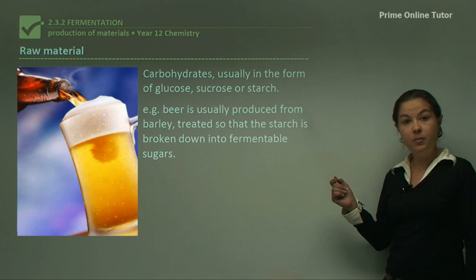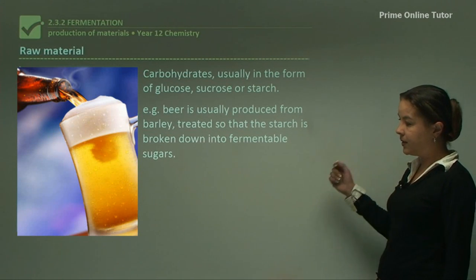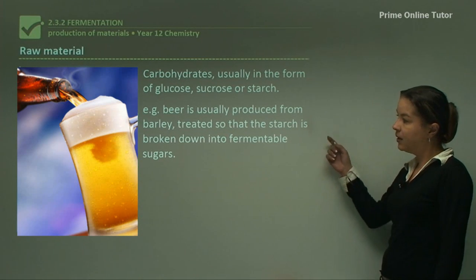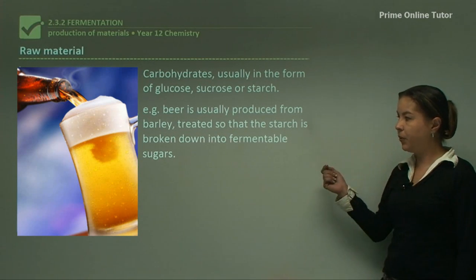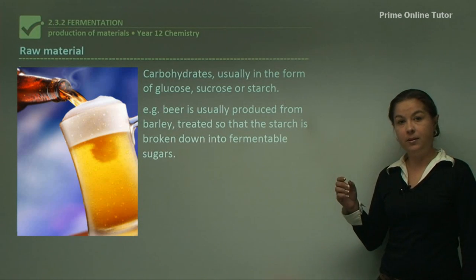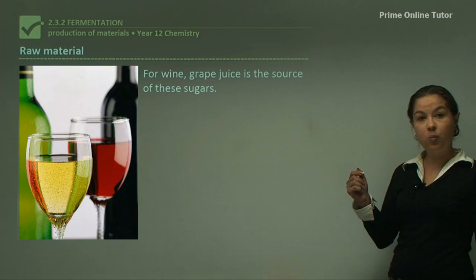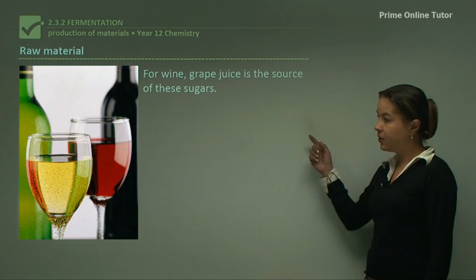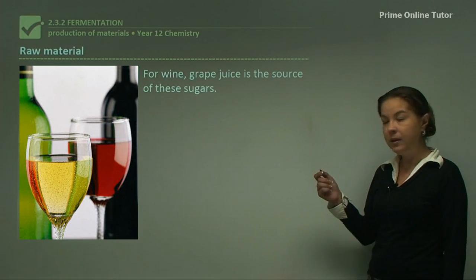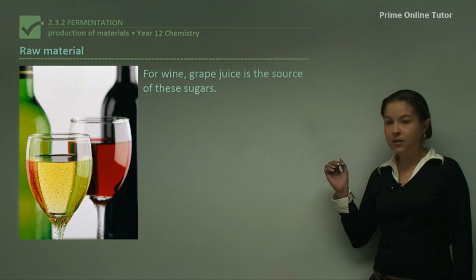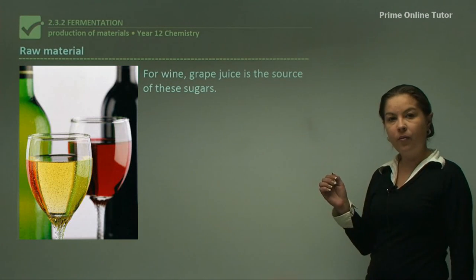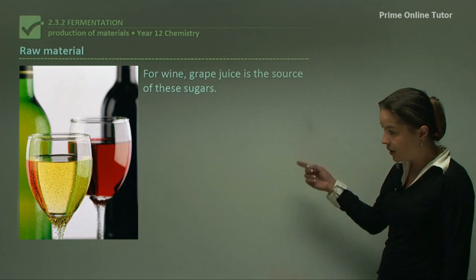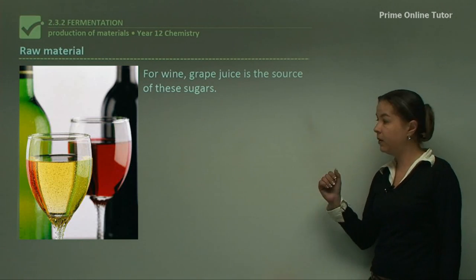Looking at a couple of examples of alcoholic beverages: beer, as you can see here, is usually produced from barley which is grown in fields. It's treated so that the starch is broken down to fermentable sugars. Another example is wine — grape juice is the source of the sugars for the fermentation. Different grapes will create different types of wine, such as red and white.